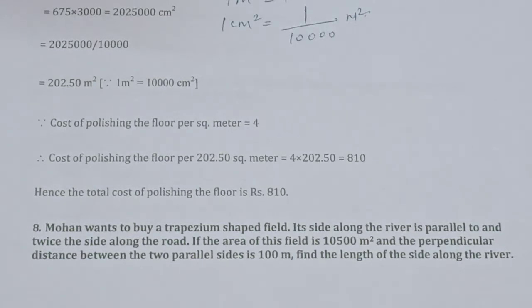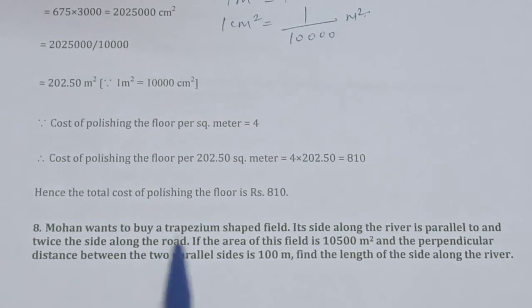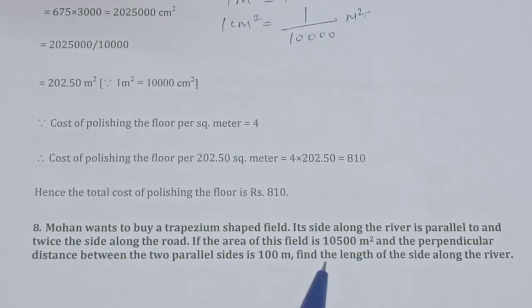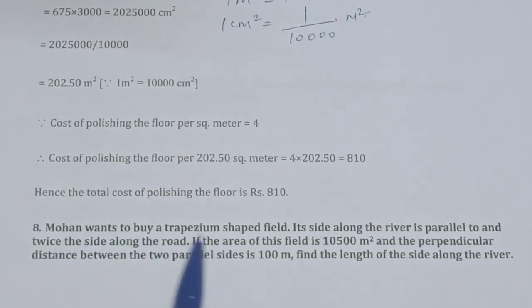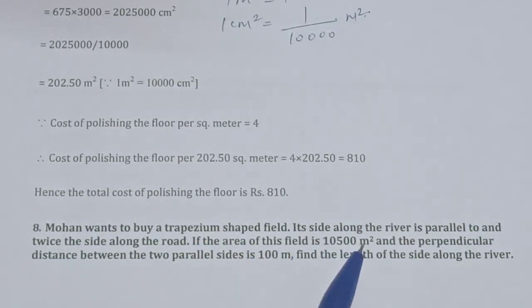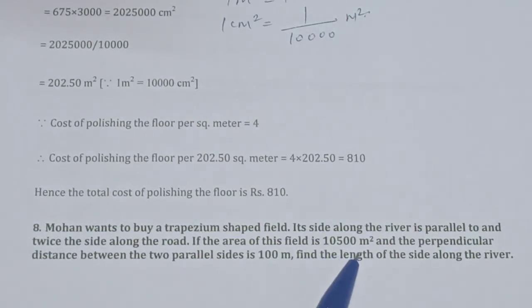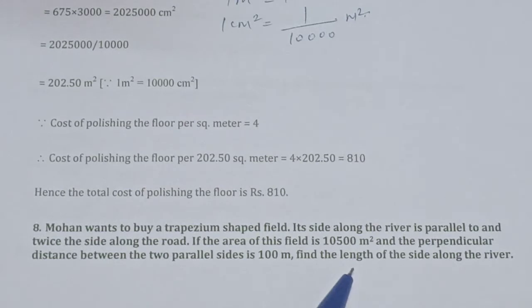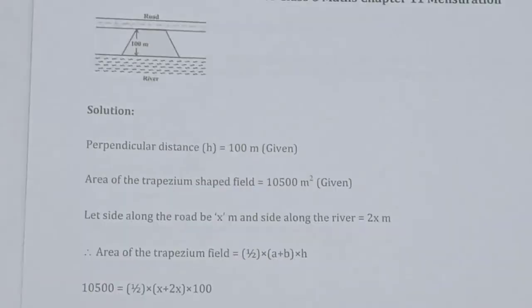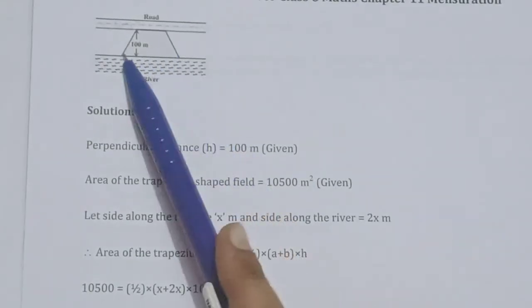Question 8: Mohan wants to buy a trapezium shaped field. Its side along the river is parallel and twice the side along the road. The area of the field is 10,500 m² and the perpendicular distance between the two parallel sides is 100 meters. We need to find the length of the side along the river.